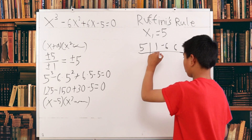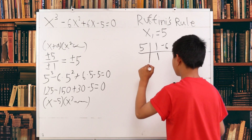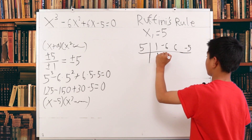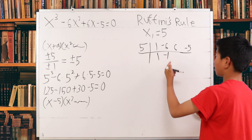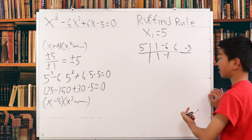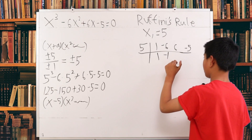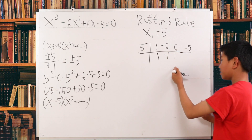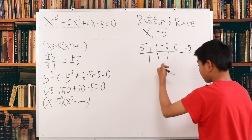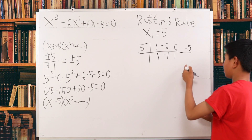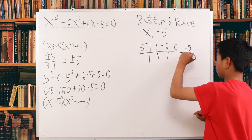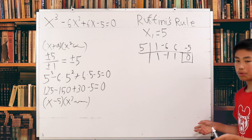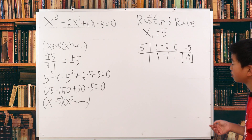Our first step: bring the 1 down. 1 times 5 is 5, plus negative 6 gives negative 1. Negative 1 times 5 is negative 5, plus 6 is positive 1. Positive 1 times 5 is 5, and 5 minus 5 is 0. So that's also proof that 5 is a root, and we now have our quadratic equation.